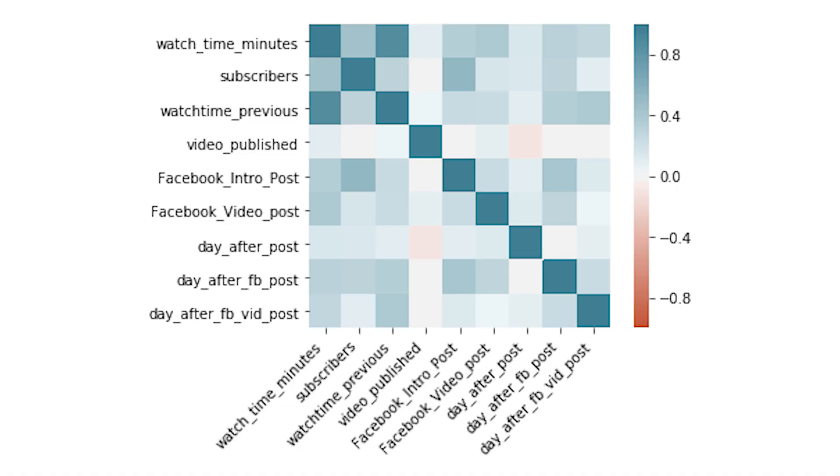So we've established that social posts and days that I actually post videos do have an impact on my viewership, subscribers, likes, and all of these things. Now I want to understand exactly how much these factor in. So I wanted to build a regression, but first it makes sense to do a correlation plot to see which of these features are related. This visual gives us an understanding of which features are related. I wanted to build a regression for both my subscribers and my watch time.